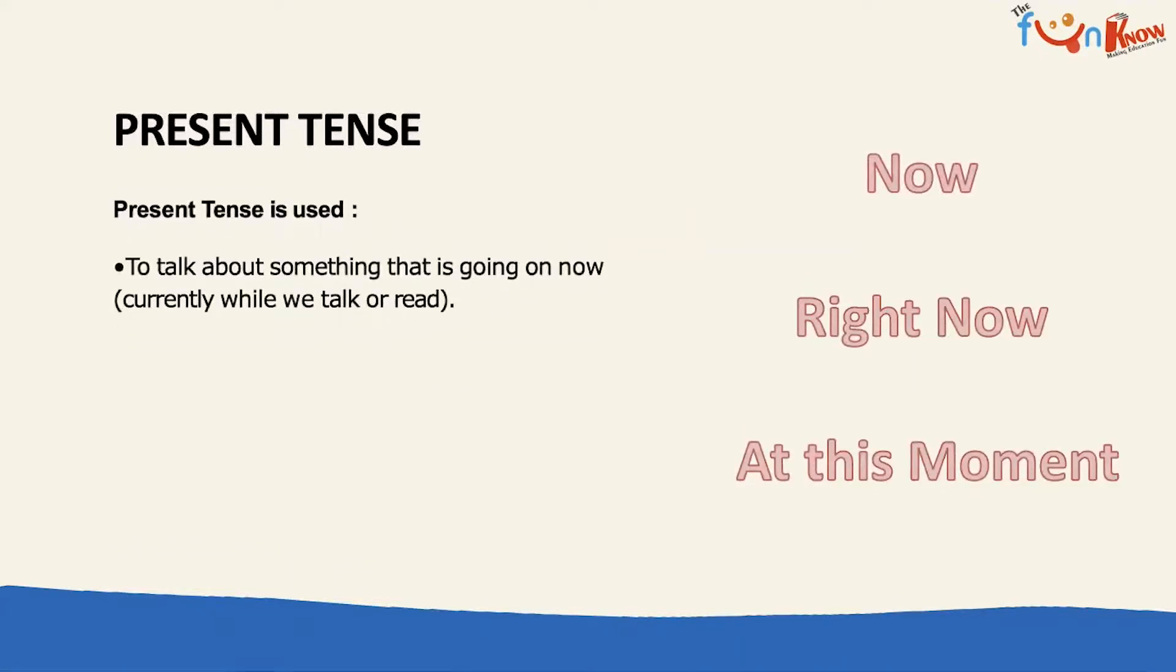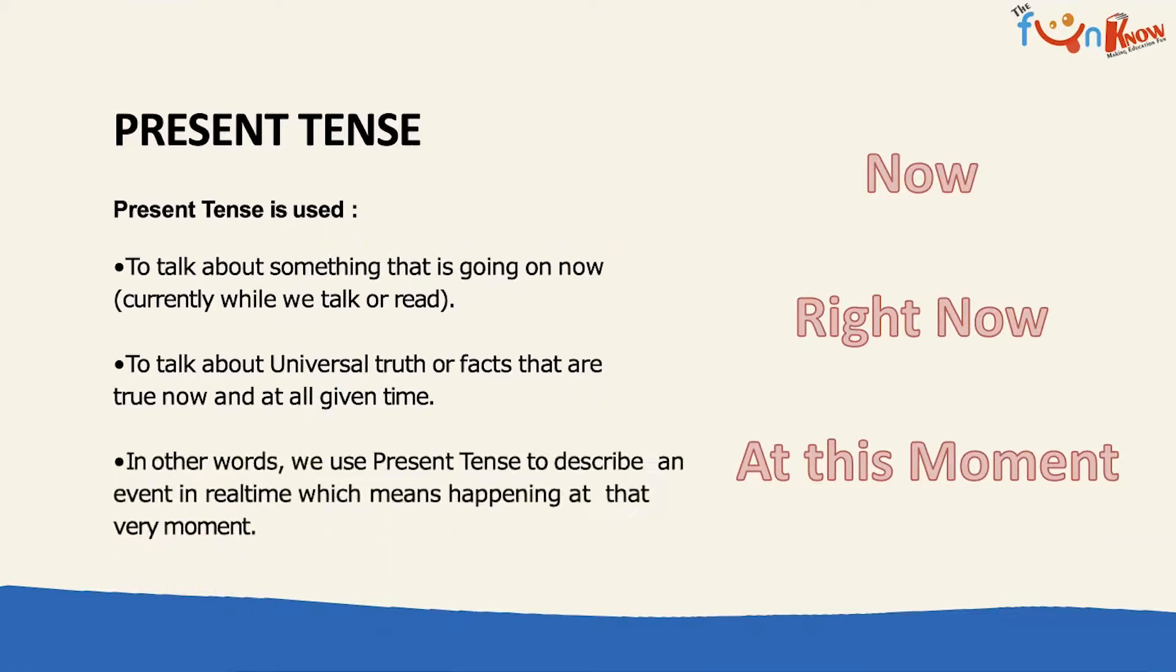Let's revise what we have learned earlier about present tense. It is used to talk about something that is going on now, currently while we talk or read. It is used to talk about universal truth or facts that are true now and at all given time. In other words, we use present tense to describe an event in real time, which means it is happening at the very moment.